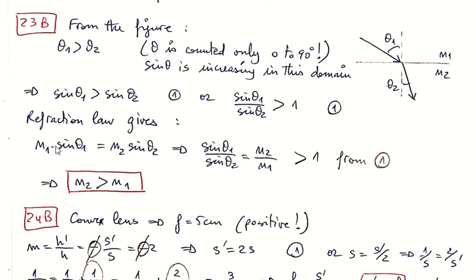And if we divide by N1, then N1 here disappears and here you get N2 underneath. So sine theta 1 over sine theta 2 equals N2 over N1. And since this is greater than 1 from equation 1, then this is also greater than 1. N2 over N1 is greater than 1, meaning that N2 is greater than N1. And this is the final conclusion.